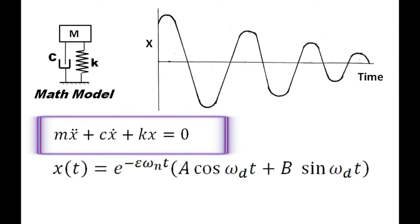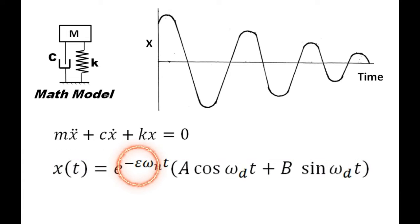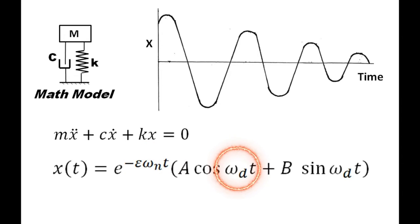If I write the equation of motion of my system, the first equation represents the force balance equation, and the right-hand side being zero indicates free vibration. The second equation is the response of the system. Here zeta is the damping coefficient — that is what we are trying to find. Omega_n is the natural frequency, equal to the square root of k by m. Omega_d is the damped natural frequency, and t is any time instant.